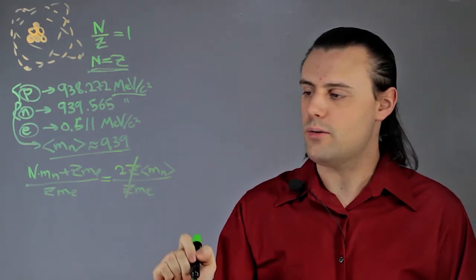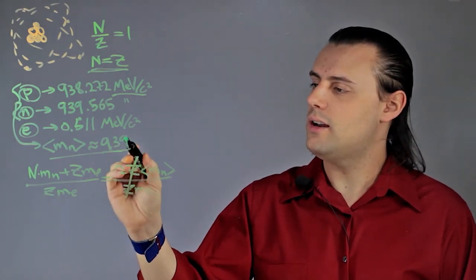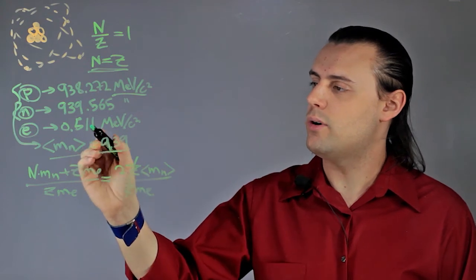The z's cancel out, so I have 2 times 939 divided by 0.511.